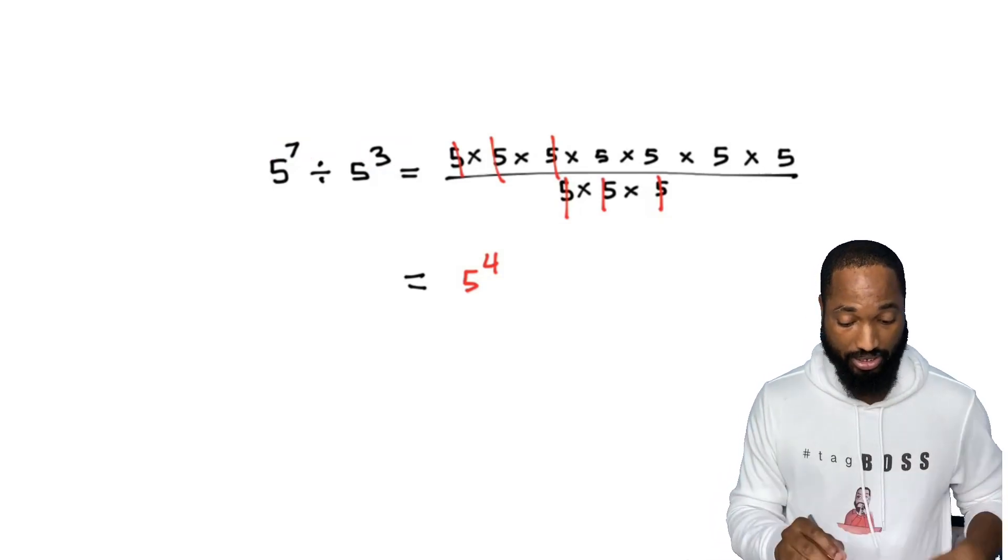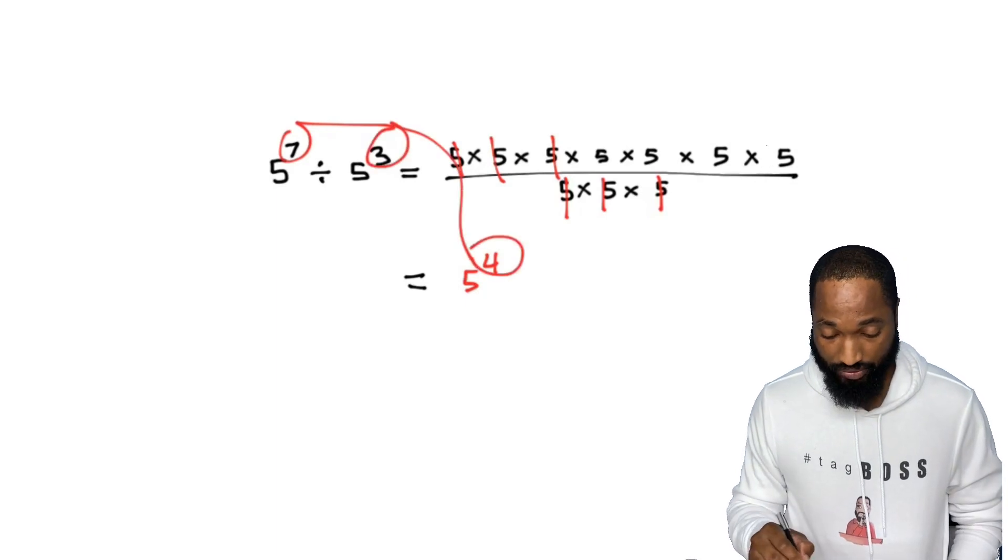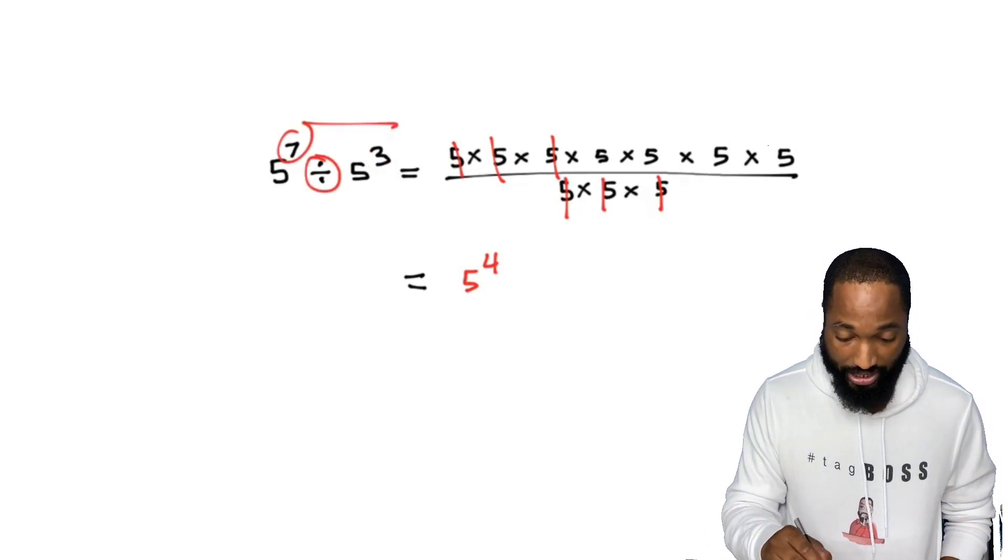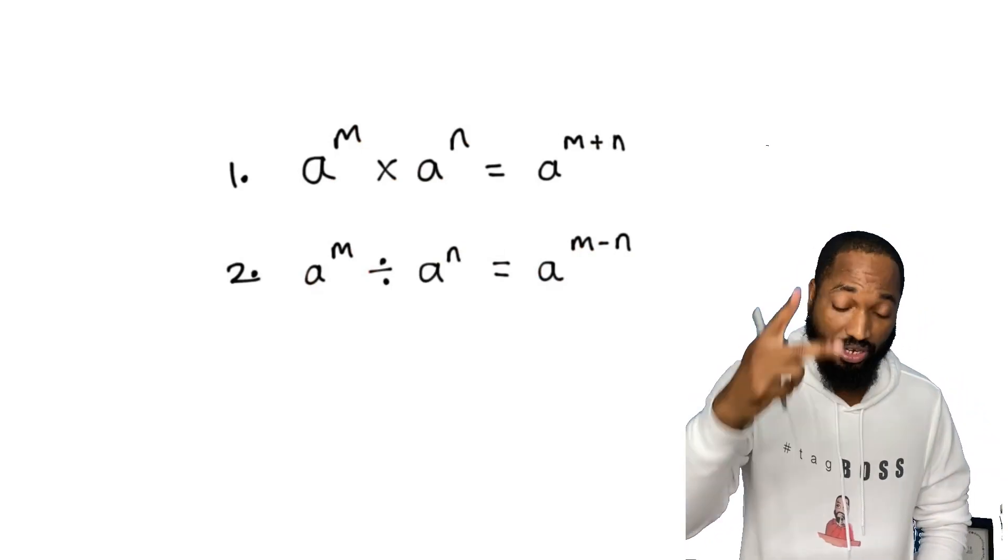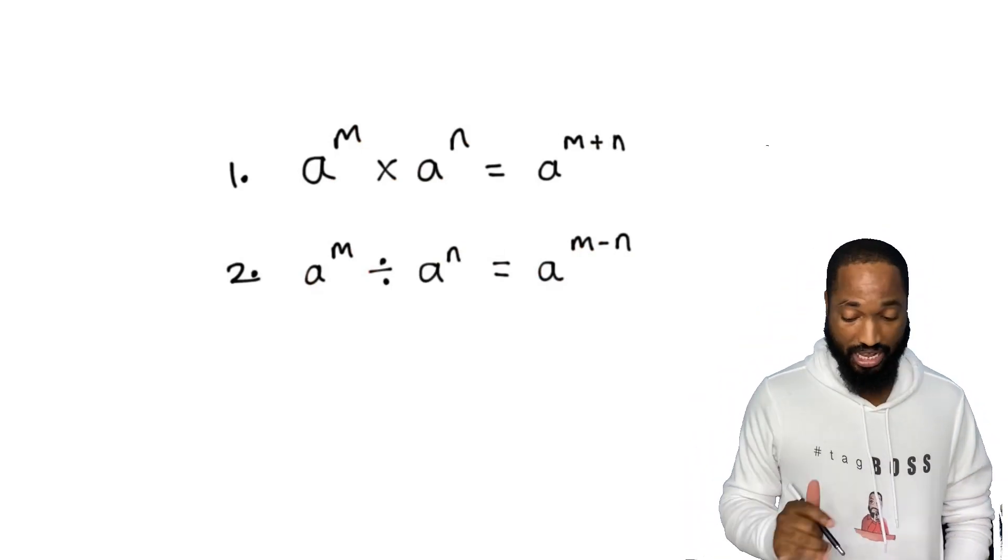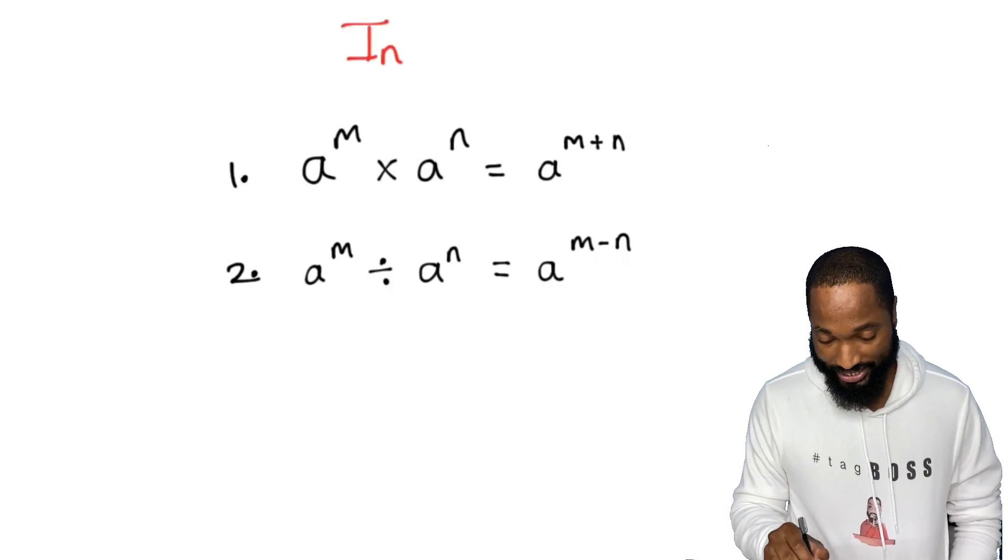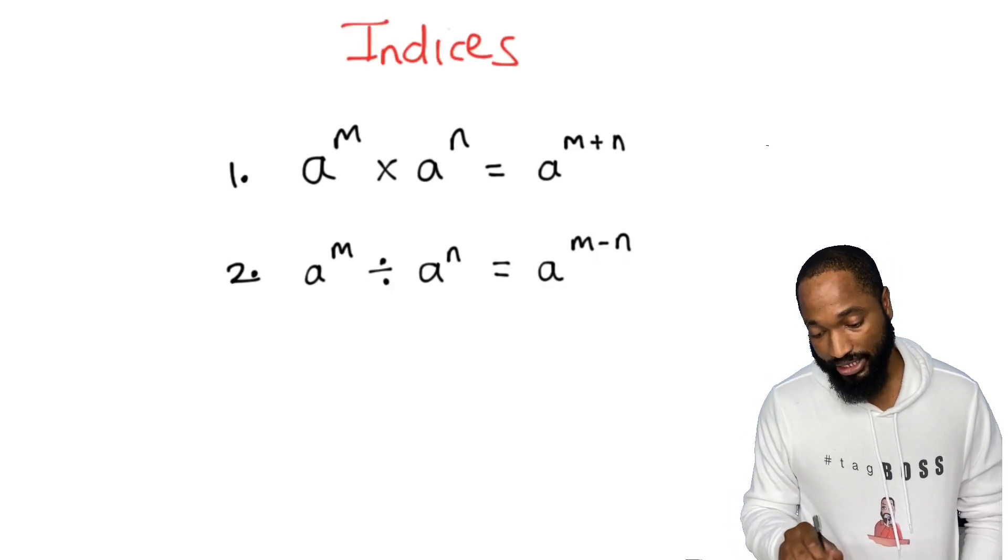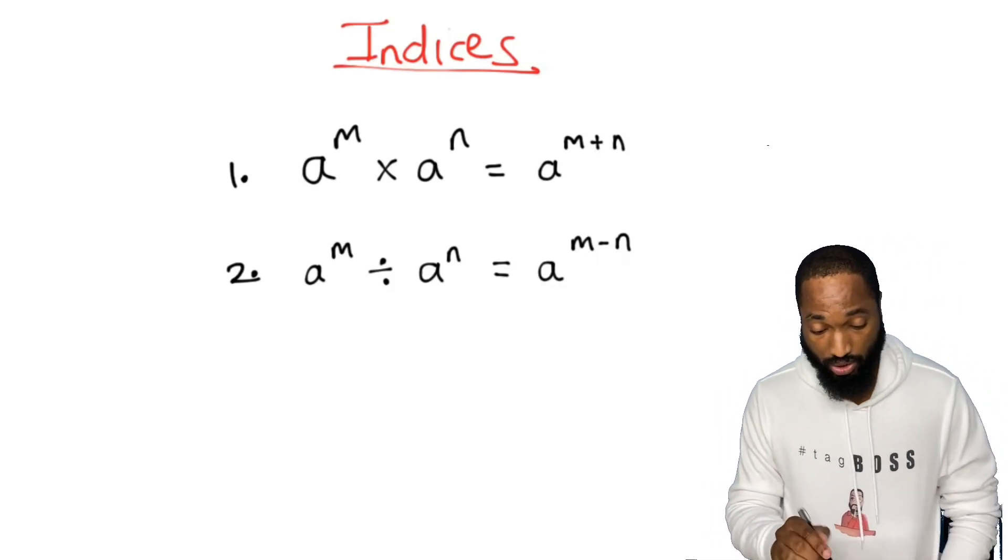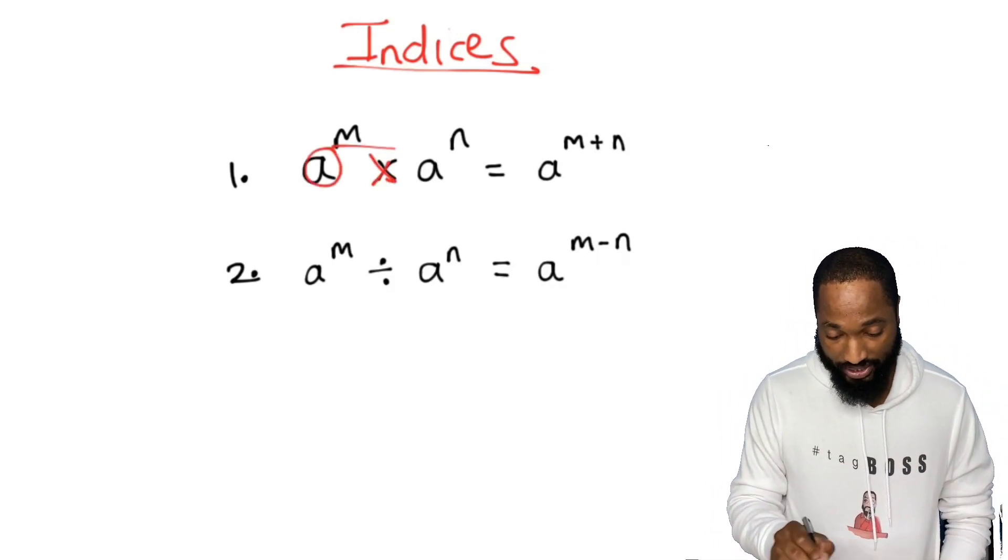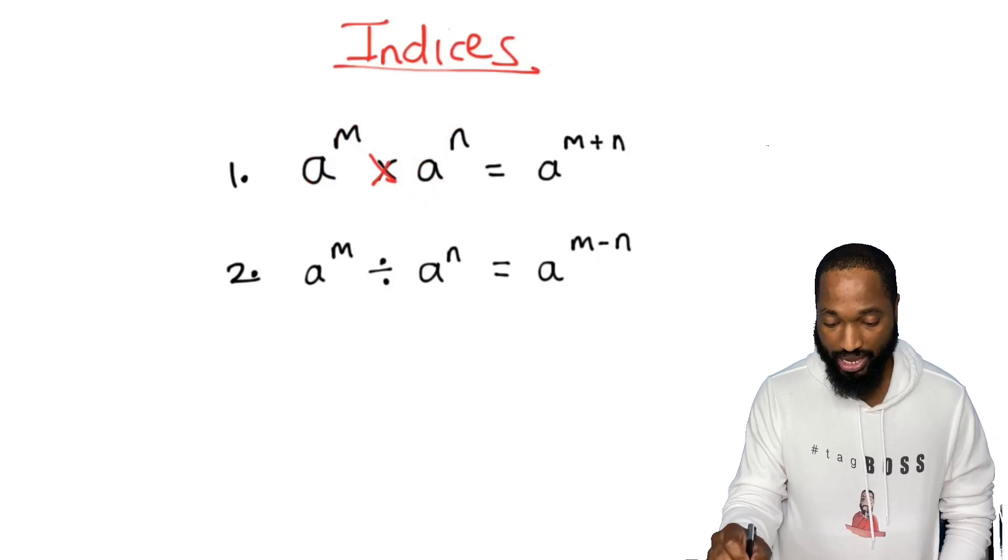What you notice when you're dividing, you subtract. So this is seven take away three is four. So if you see a division sign there, you subtract the powers. That leaves us with our first two rules of indices, that's what we call this whole topic.